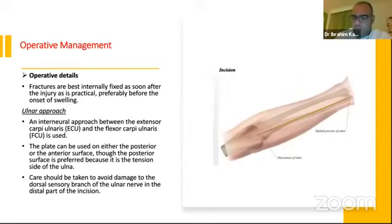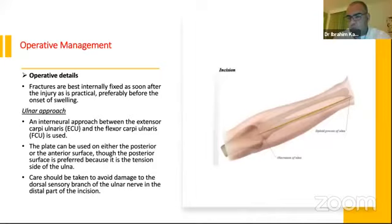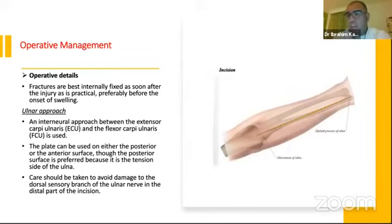Care should be taken to avoid damage to the dorsal sensory branch of the ulnar nerve, especially in the distal third. When the ulnar fracture is very distal and there is not enough space for three screws in the distal fragment, we can use the 2.7 mm plate, which allows fixation in these challenging situations.